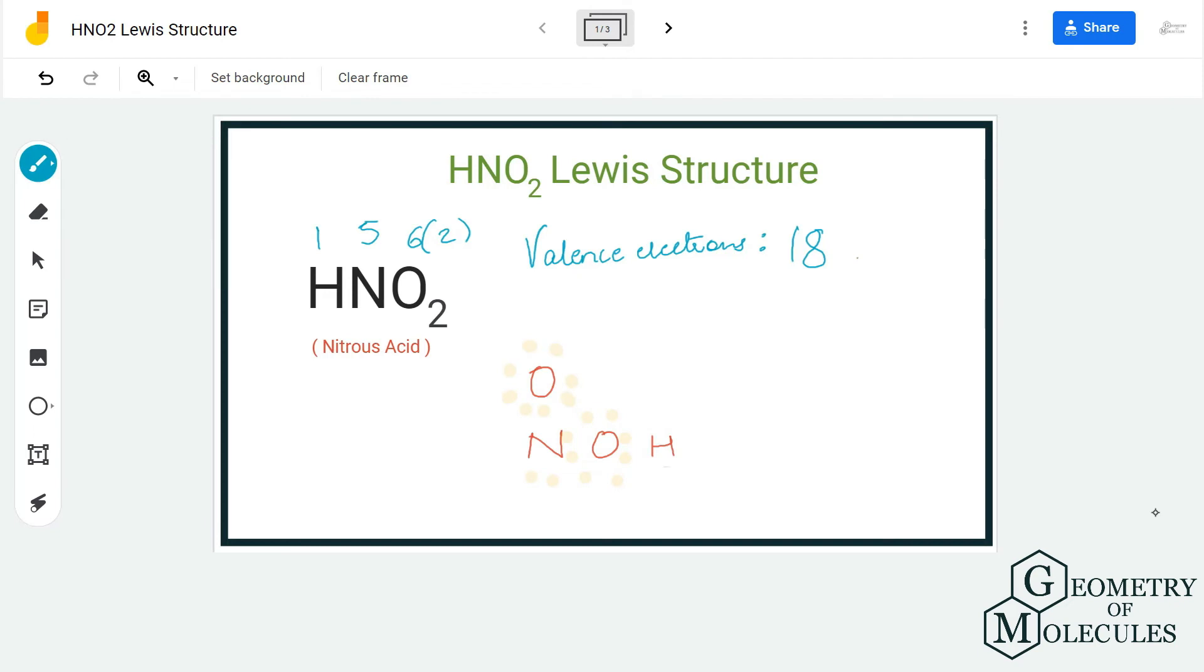So what we are going to do is shift a pair of electrons from oxygen atom over here into the middle and check if this completes the octet for nitrogen atom as well.